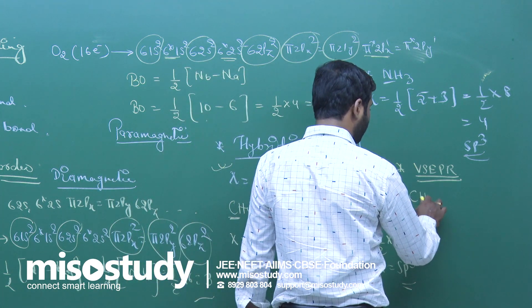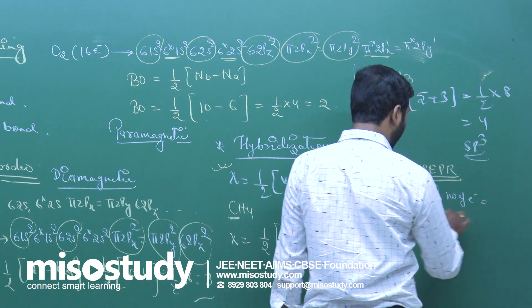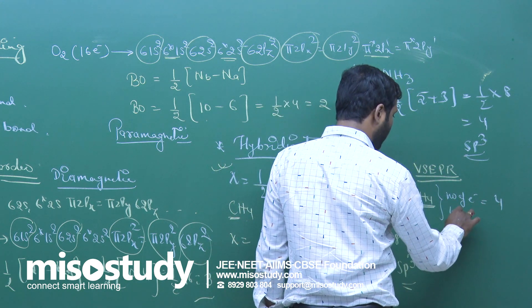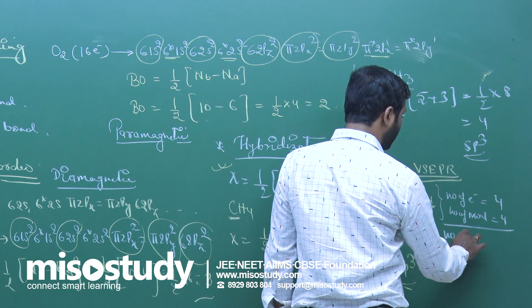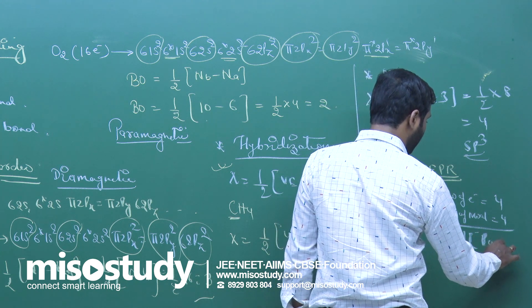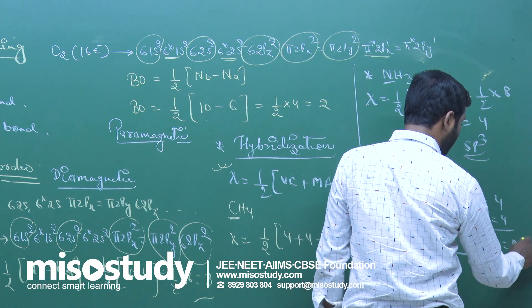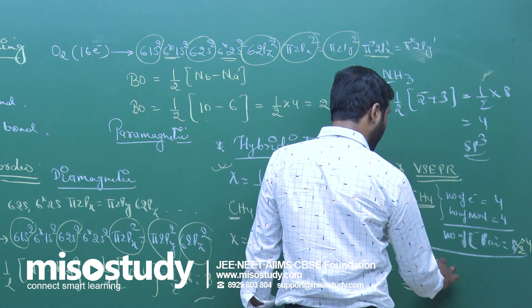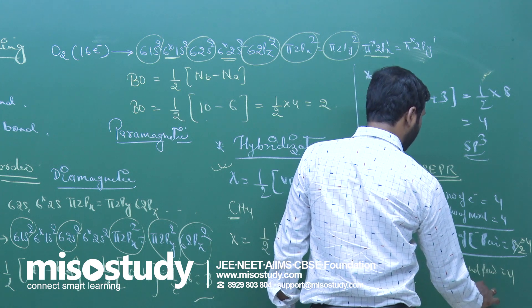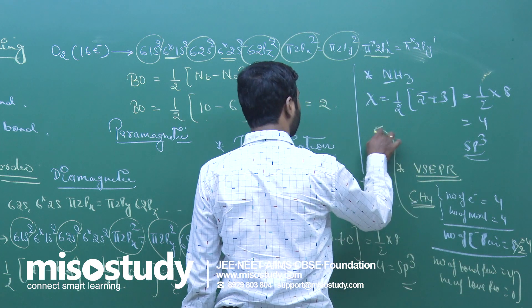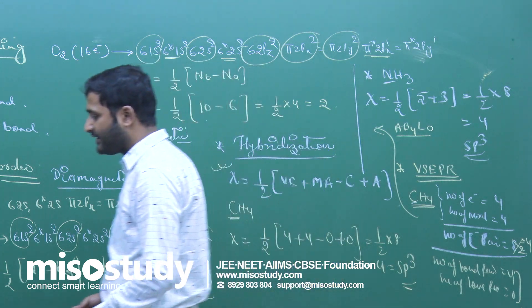Consider CH4: number of valence electrons of the central atom = 4; number of monovalent atoms attached = 4. Total electrons = 4 + 4 = 8; divided by 2 gives 4 electron pairs. Number of bond pairs = 4, number of lone pairs = 0. So the formula of CH4 is AB4L0, and the shape is tetrahedral.